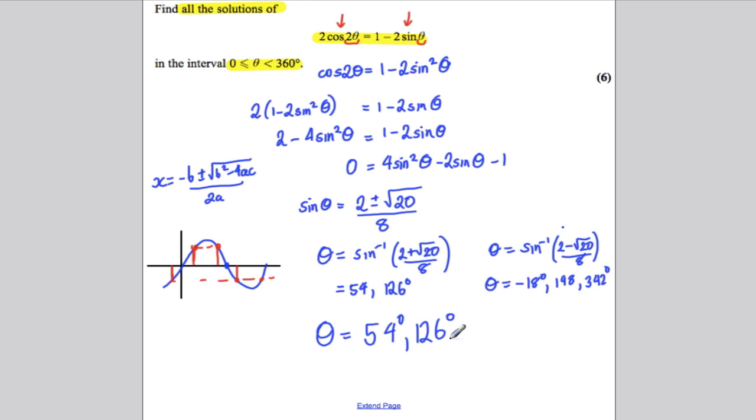Is equal to 54 degrees on the one hand, 126 degrees on the other hand, 198 degrees on the other hand, and 342 degrees on the other hand. You're going to ignore that solution there. And you're done.